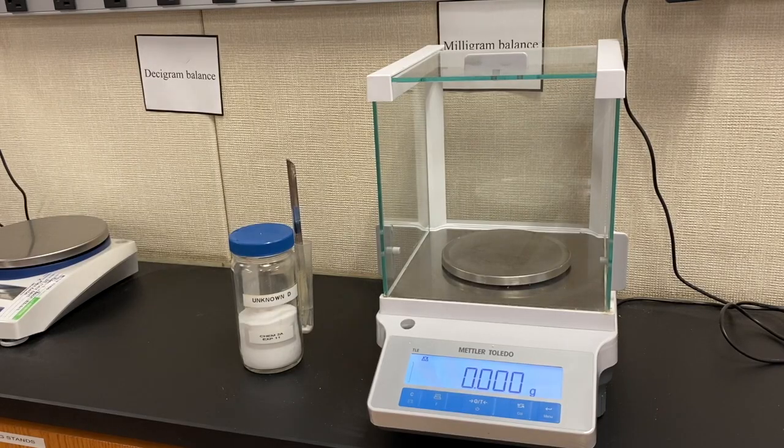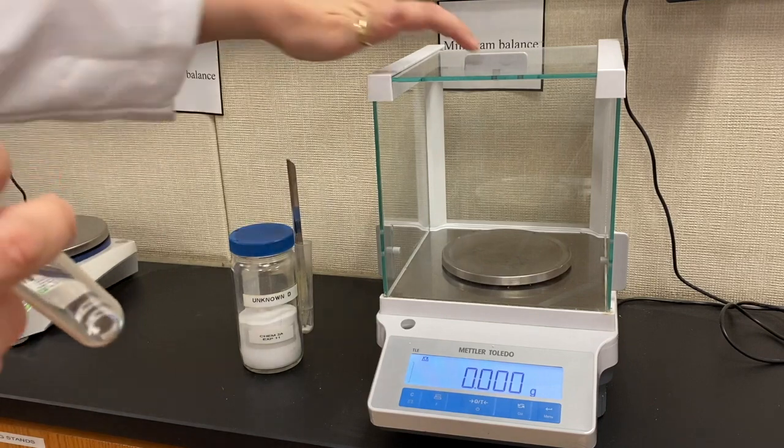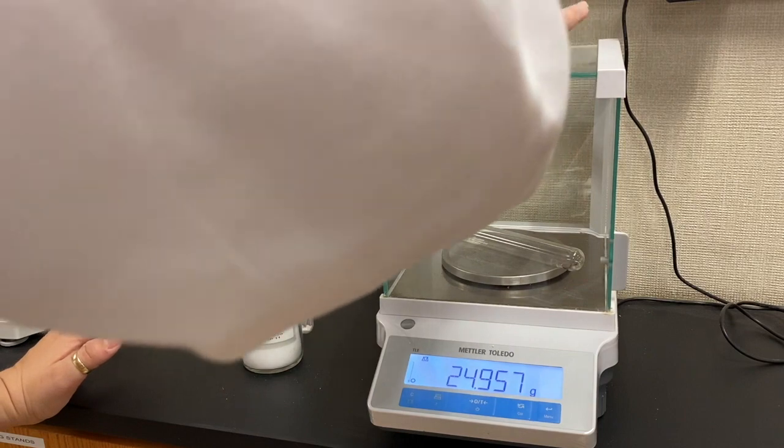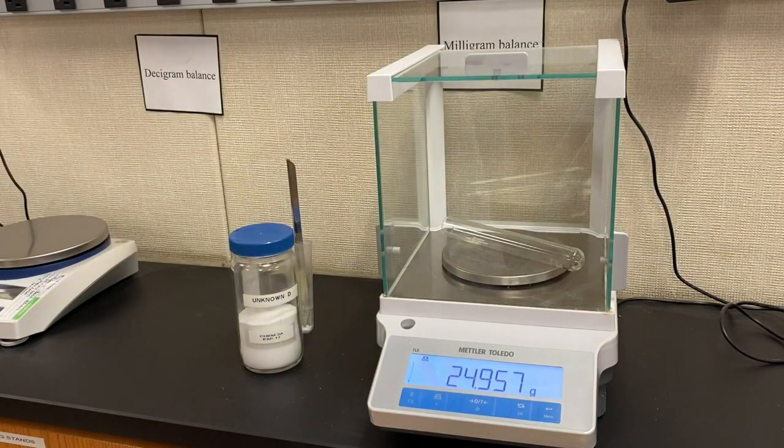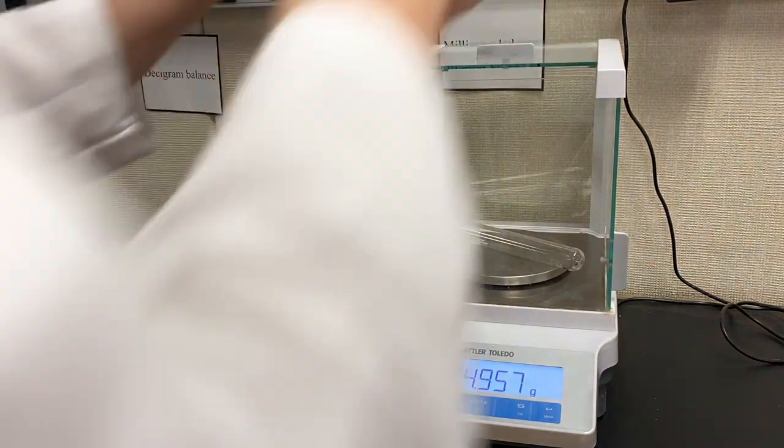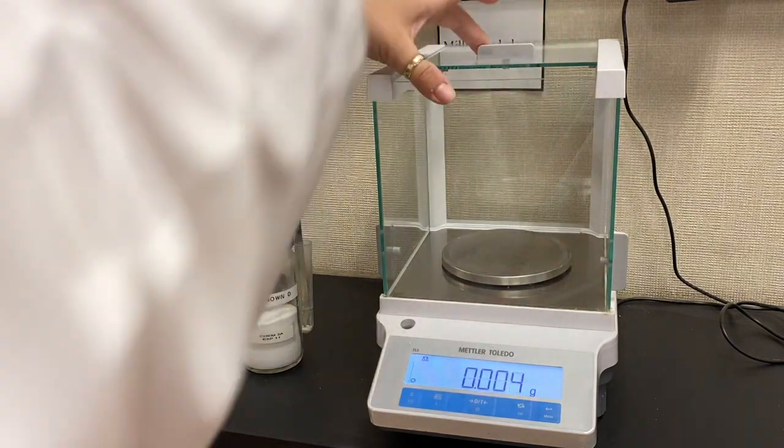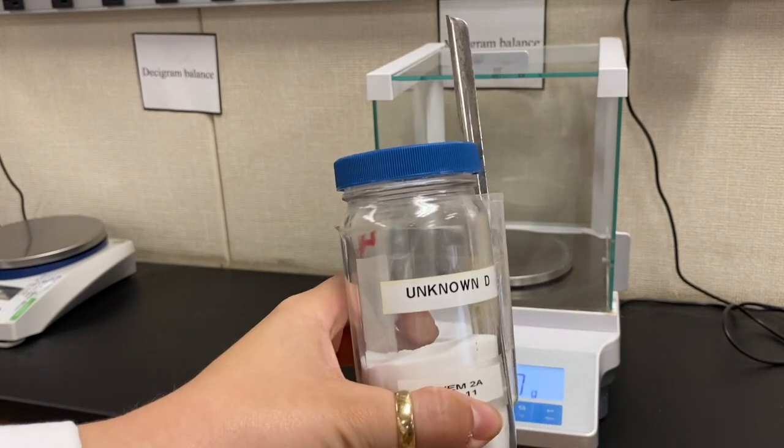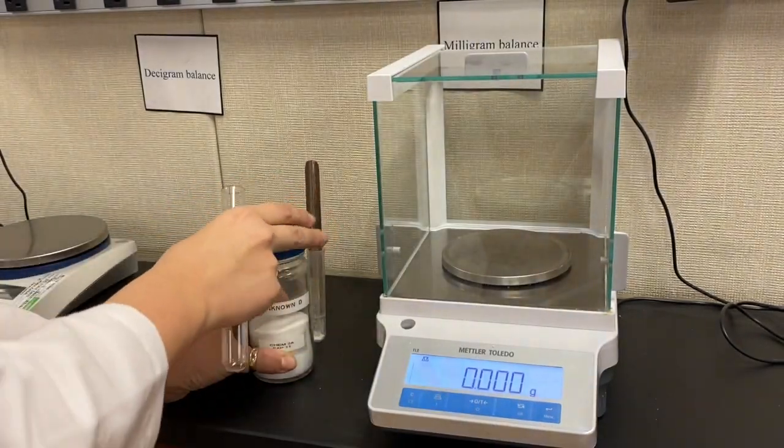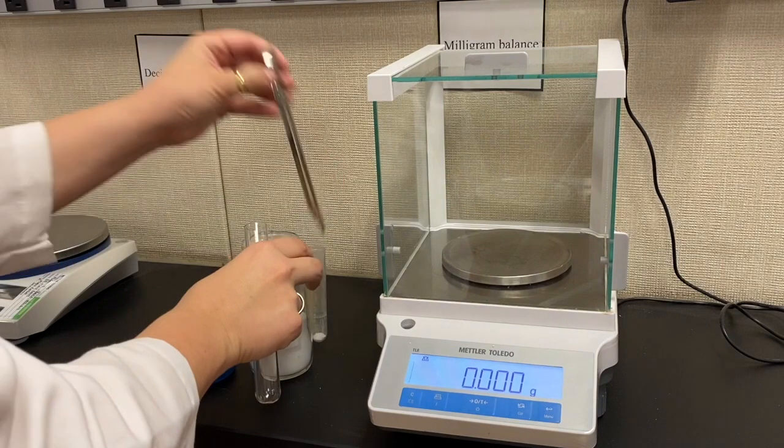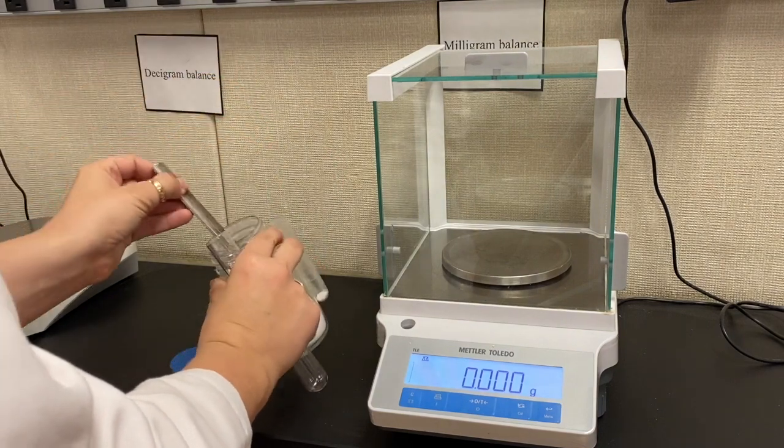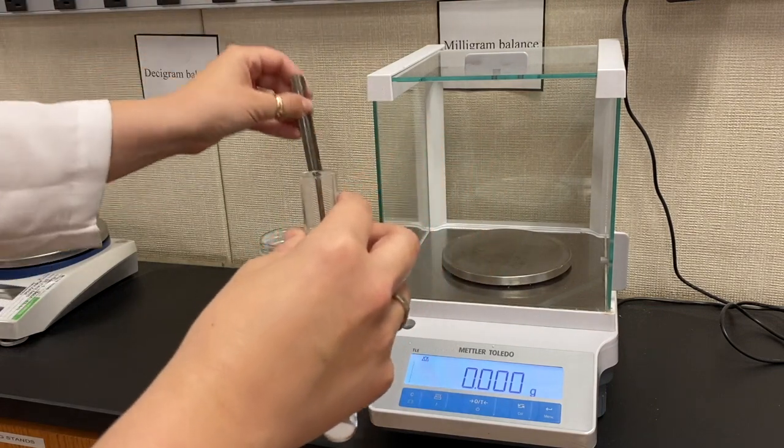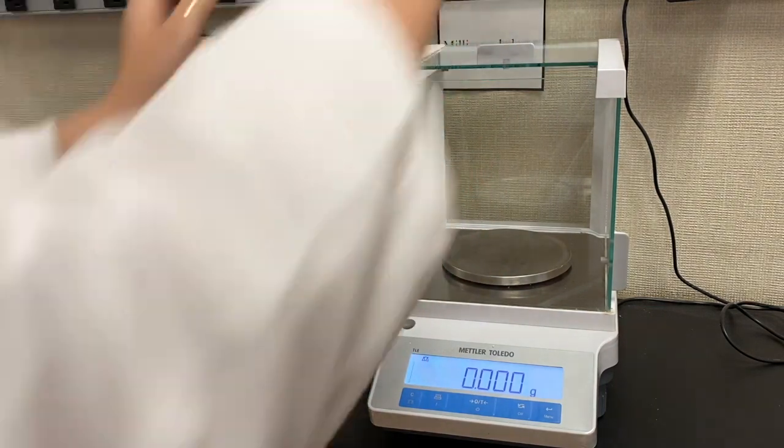Now look, we're back at the scale. So new empty test tube. We mass it. Ta-da! And same thing. We add about one gram of unknown D. Exciting. And we mass it.